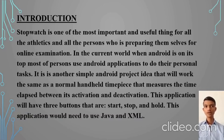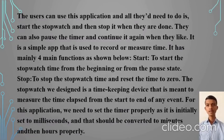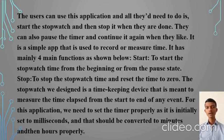In the current world, when Android is at its topmost, people use Android applications to do their personal tasks. It is another simple project idea that works the same as a normal handheld timepiece that measures the time elapsed between its activation and deactivation. This application will have three buttons: Start, Hold, and Reset. Users can start the stopwatch and then stop it when done. They can also pause the timer and continue it again when they like.